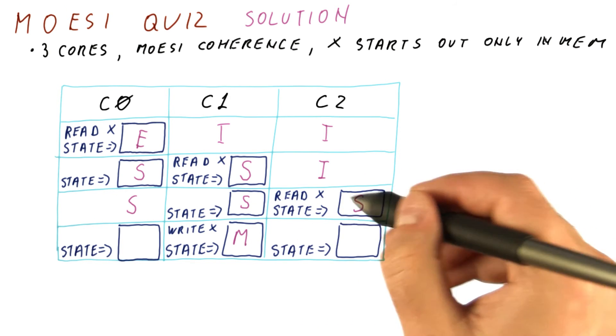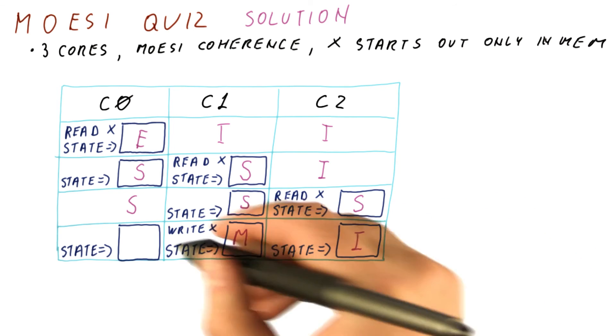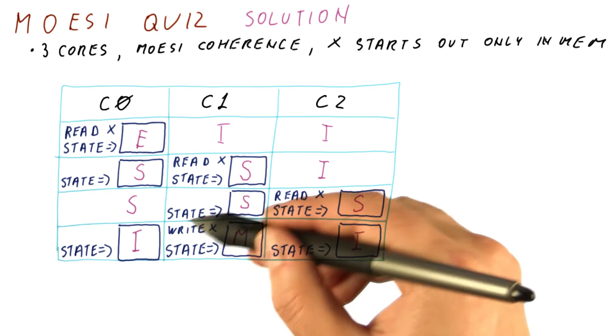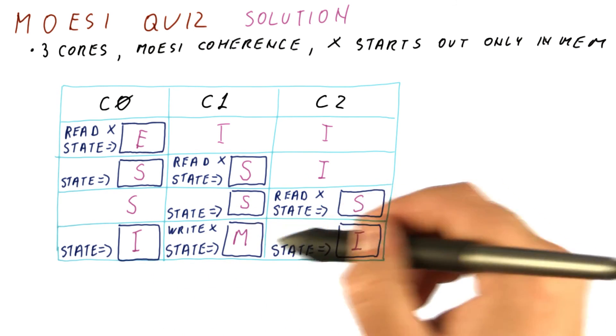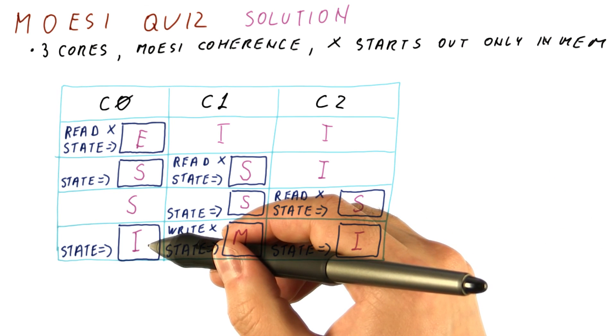Others see that invalidation request and go to the invalid state. After a write, we are always in the modified state, and all others are always in the I state at that point.